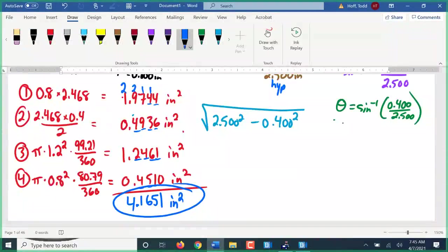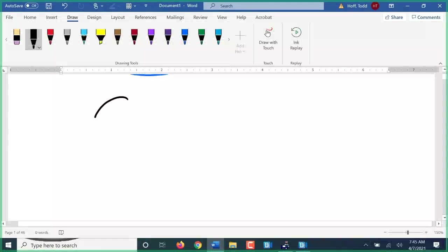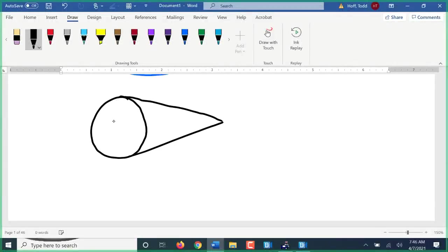Not bad. Total area approximately 3.87 square inches. Let's try something a little different. Here we have a circle. Tangents coming off and intersecting.